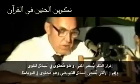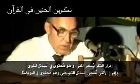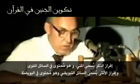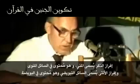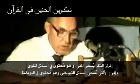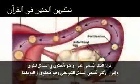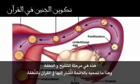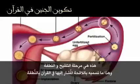The male secretions, called semen, contain the spermatozoa, and the female secretions, called follicular fluid, contain the ovum. This is the stage of fertilization and the nutfa. This is what we call the zygote, referred to in the Quran as the nutfa.